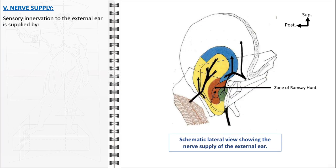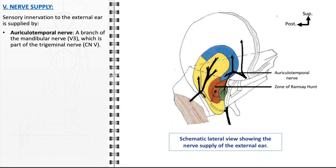The nerve supply to the external ear is a complex network ensuring this sensory organ can transmit various sensations, including touch, pain, and temperature. This innervation is achieved through contributions from several cranial and cervical nerves. The auriculotemporal nerve, a branch of the mandibular nerve — which is itself a part of the trigeminal nerve — plays a significant role in the sensory innervation of the external ear, supplying sensation to the anterior and inferior regions of the auricle as well as parts of the external auditory canal. The trigeminal nerve thus extends its reach to the ear as well.